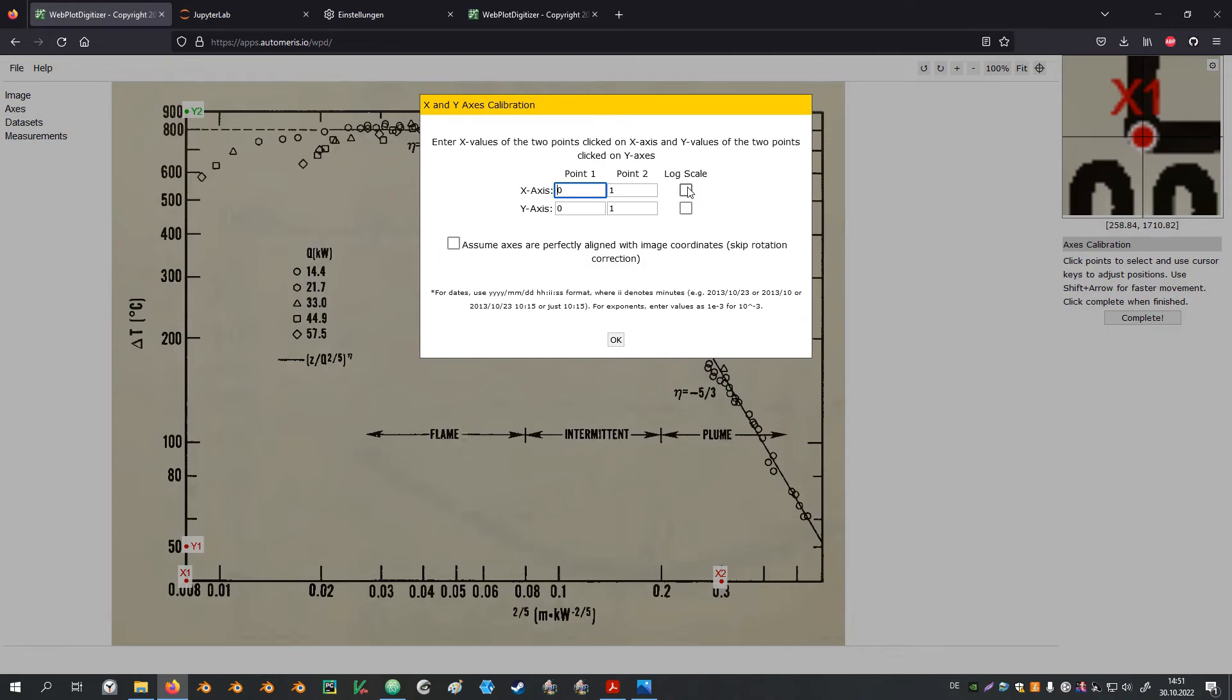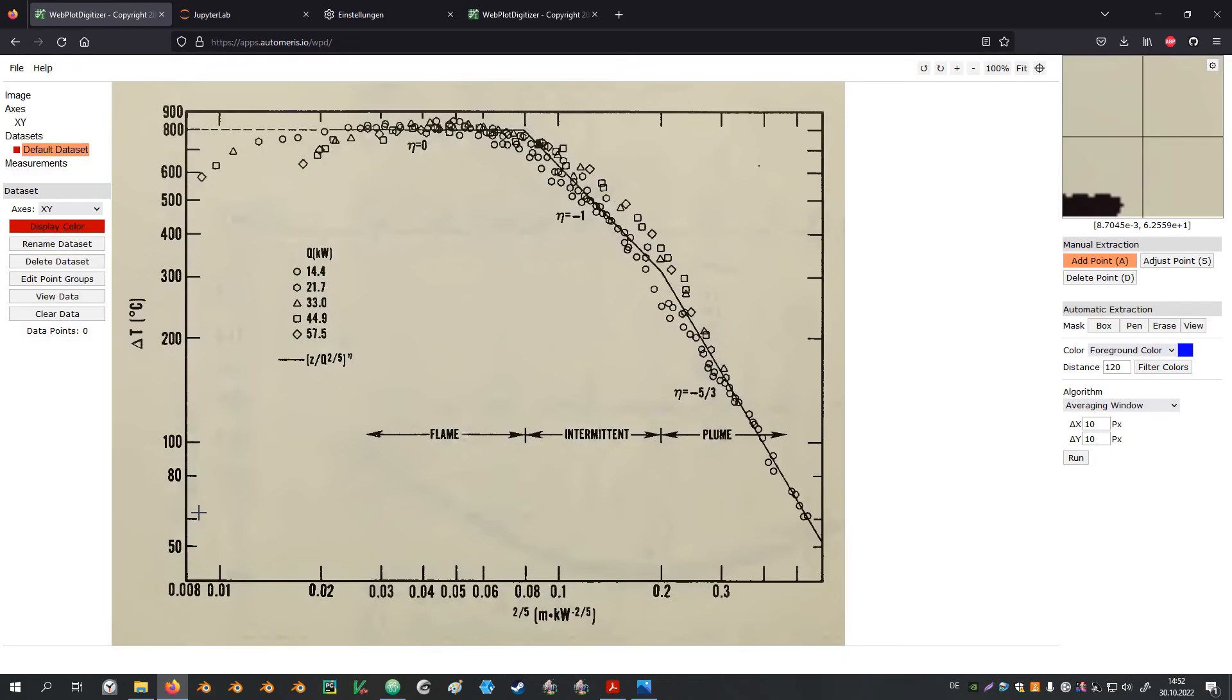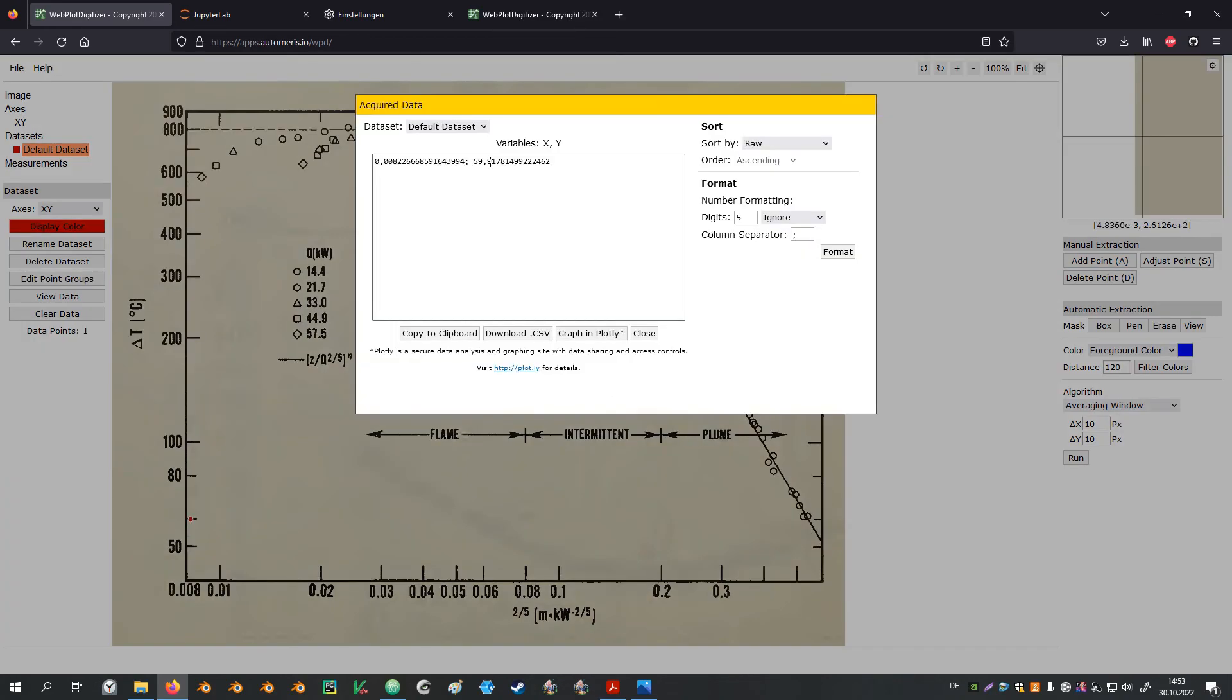Now hitting complete we can use the check boxes on the right to indicate that this axis is a log scale axis. And then the appropriate point values need to be entered. On the axis are also a couple of tick marks which have no labels. Since we have defined our axis now we can easily figure out what their label should be. For instance we add manually a point here on the y axis between the 50 and the 80. Clicking on view data we can see that this point is at 60 degrees celsius.